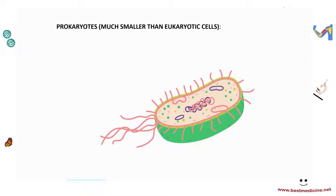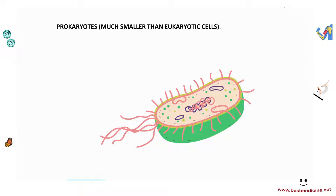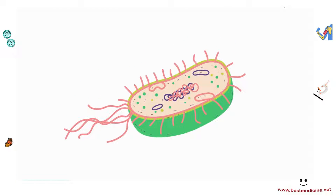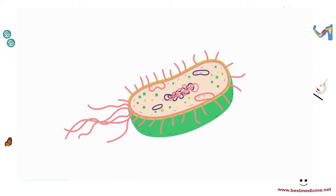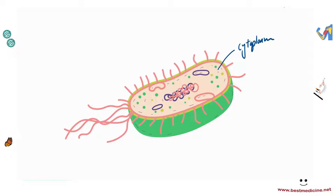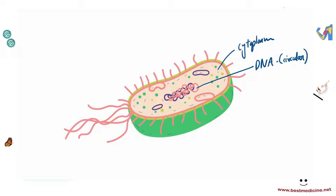The next type of cell in the series is prokaryotes. Remember, prokaryotes are unicellular organisms and they do not have a nucleus. Here's a sample prokaryote — a bacteria or archaea. They have some features in common with eukaryotes (shown in blue) and some differences (shown in red). Similarities include: cytoplasm, DNA, cell membrane, and ribosomes.